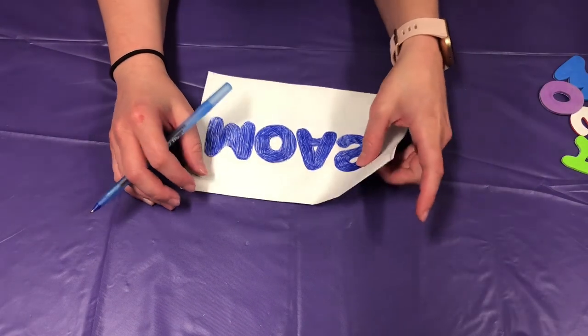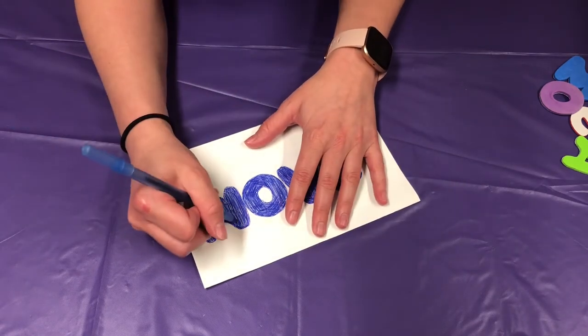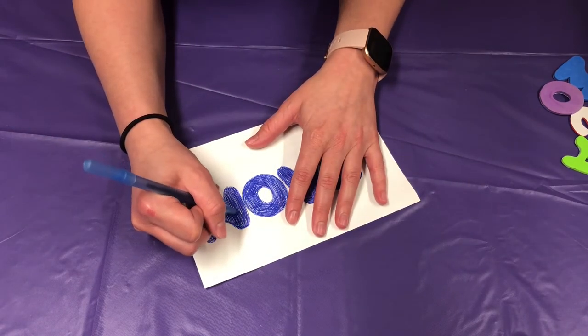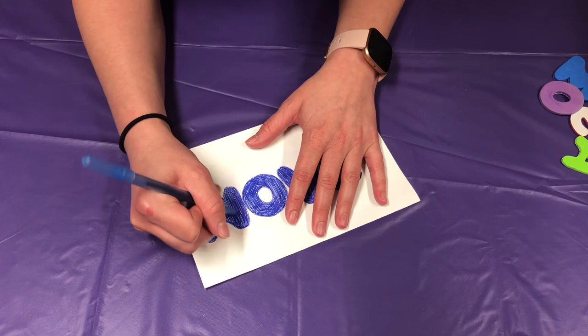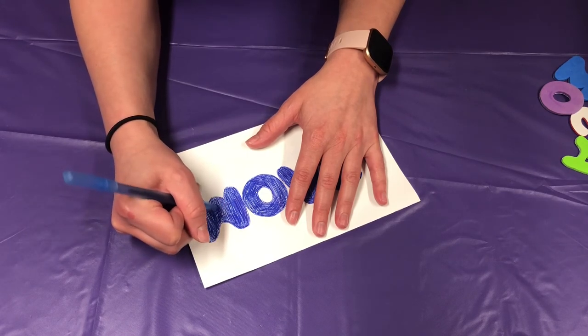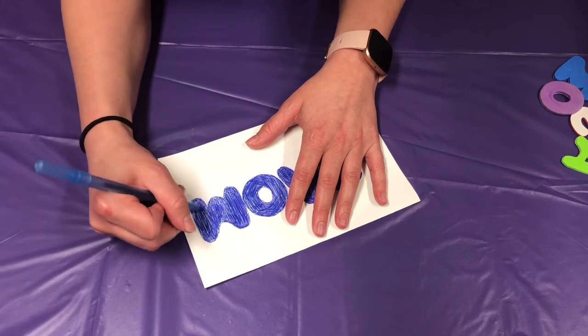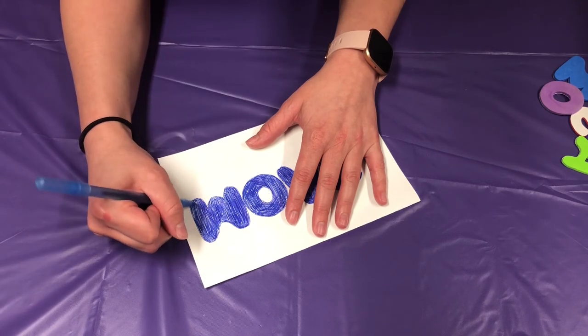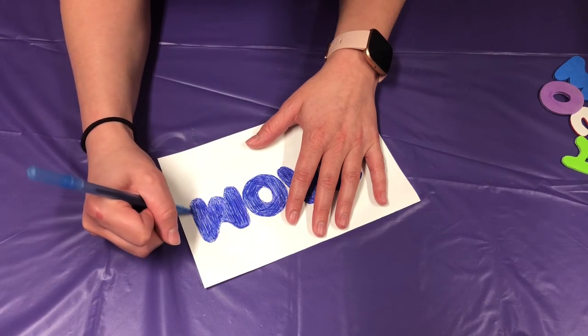So once you have your faces all colored in, just go back through and kind of try to fill in the white spaces that you may have missed. I know coloring with pen is not the easiest and your hand's probably tired. Try to fill in as much as you possibly can.